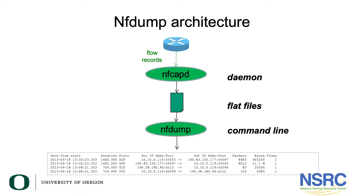The slide shows the architecture. We've got the router exporting flow records. nf-d is the daemon that captures these and writes them to flat files. And then we've got nf-dump, which is the command line tool that displays these captured flow records.